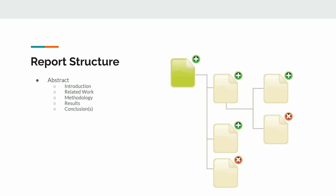After the abstract, you write the introduction — this time as a full section of maybe two or three pages, depending on the page limit. Here you explain what motivated you to work on this project and the importance of it. You can write quite a lot in the introduction. After introduction, you need to write about background, related work, or literature review, explaining the papers you read that are related to your work.